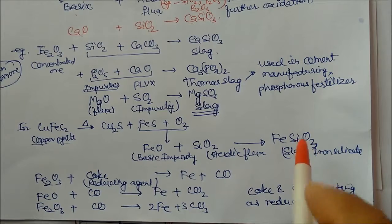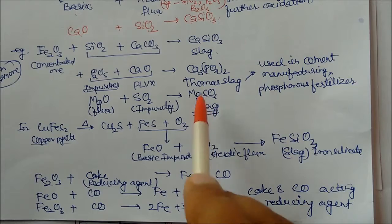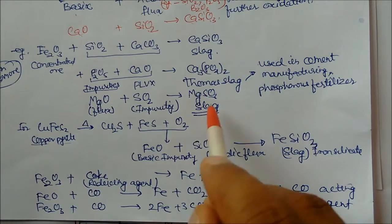Here I have one more. MgO plus SO2. You will get magnesium sulfite. It is also a slag.